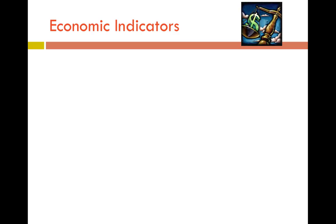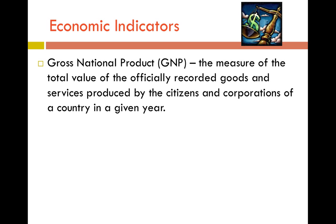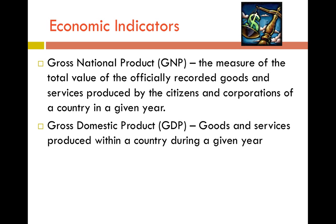We're going to look at the first two economic indicators at once and then compare and contrast them. The first would be gross national product, the GNP. This is a measure of the total value of the officially recorded goods and services produced by the citizens and corporations of a country in a given year. This takes into account things both inside and outside of the United States. Now a little bit different than that is GDP — goods and services produced within a country during a given year.